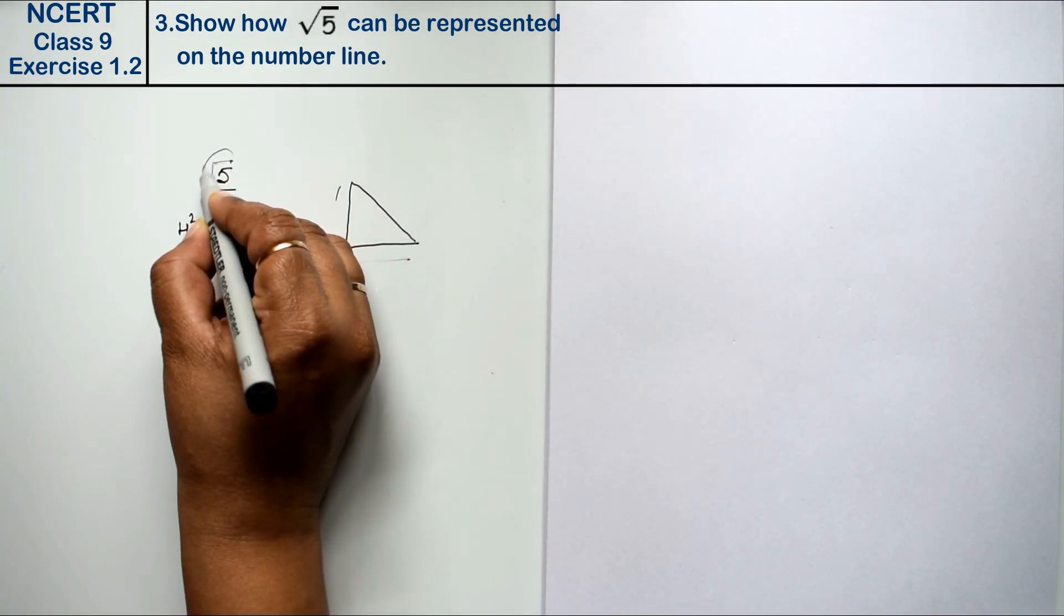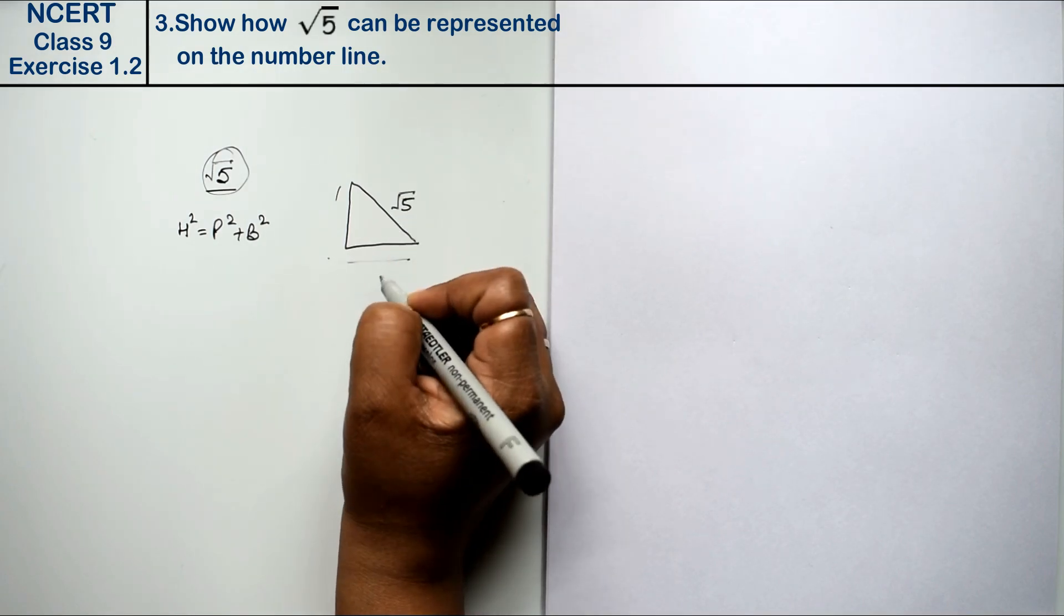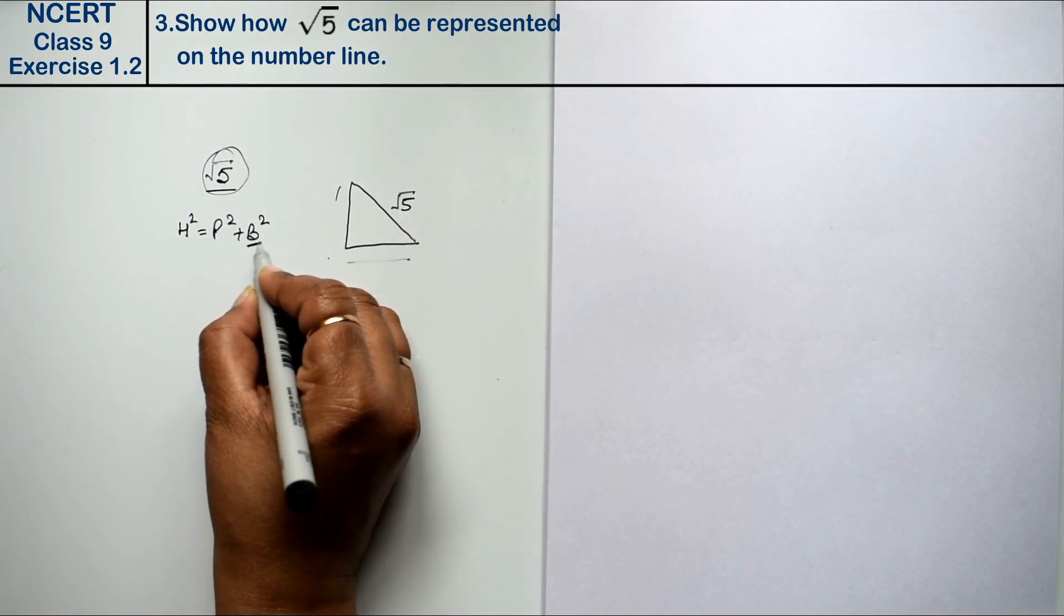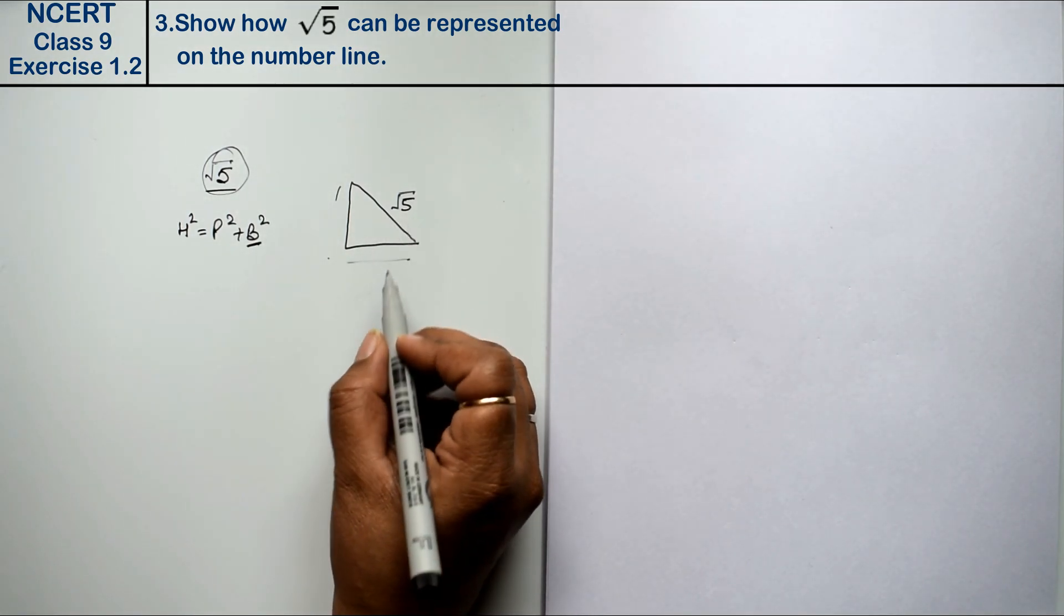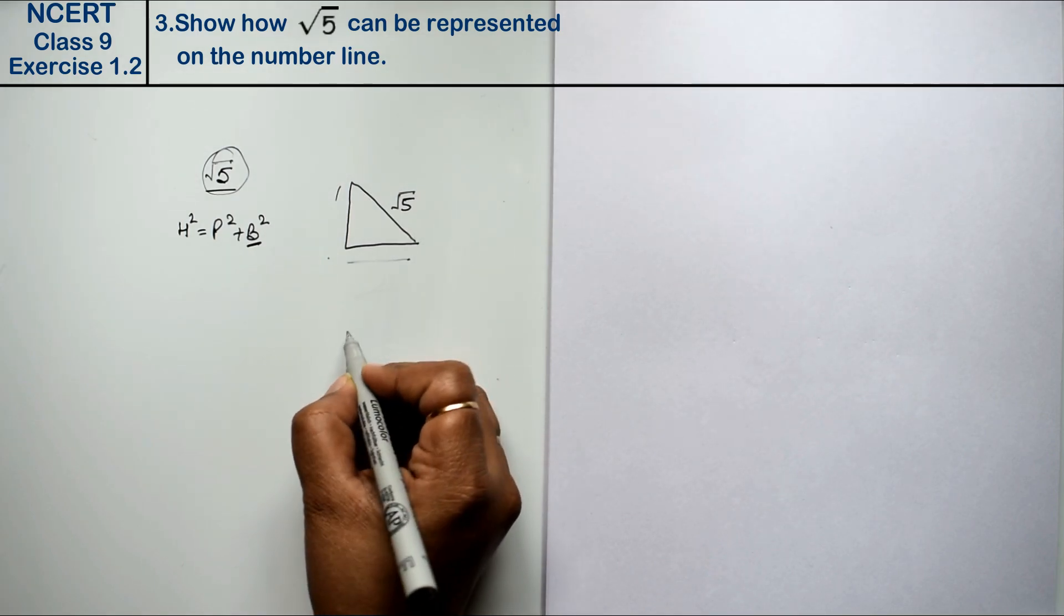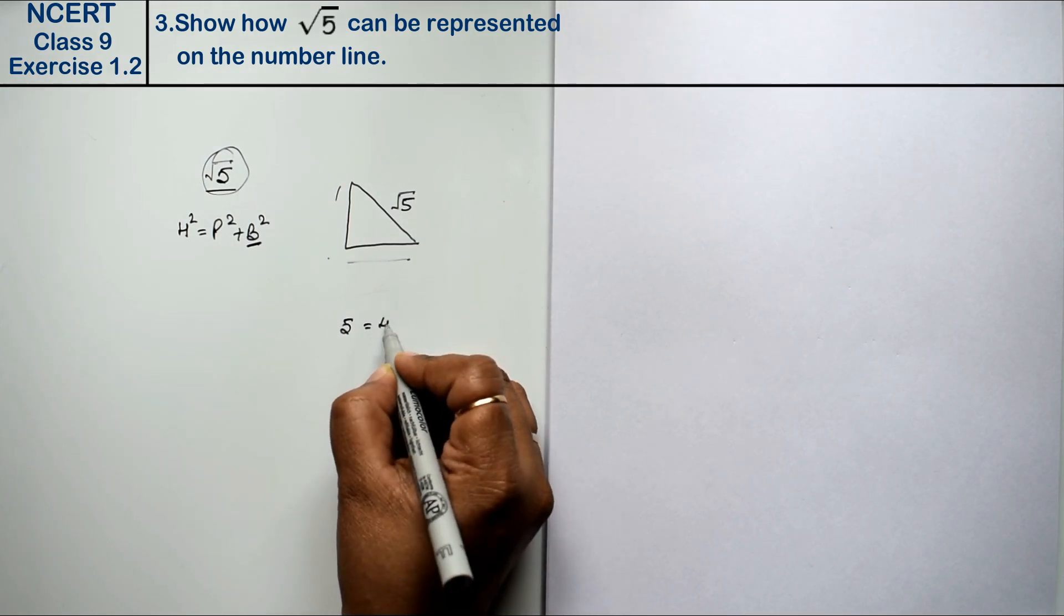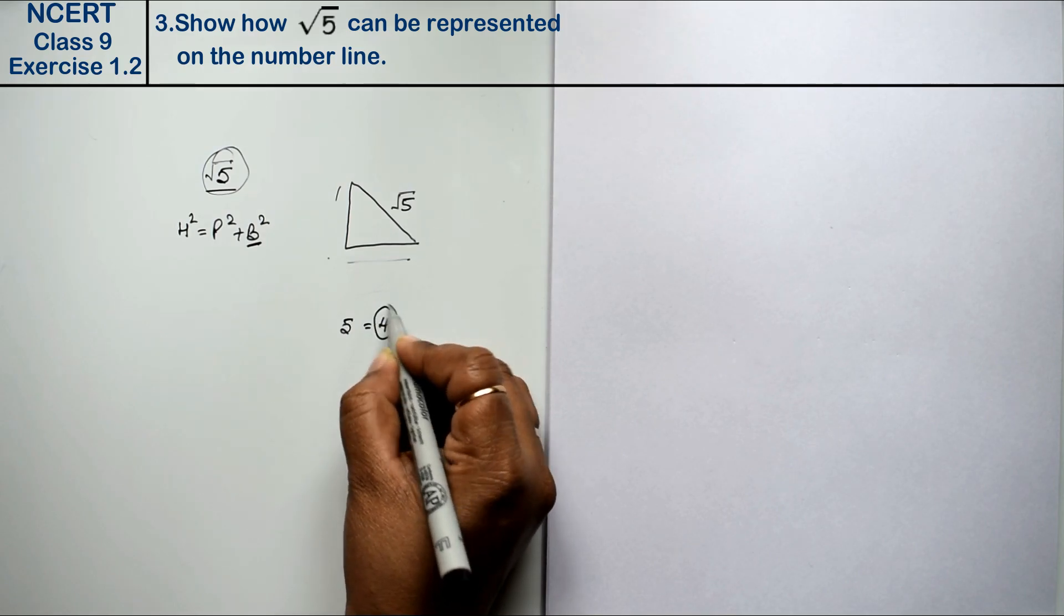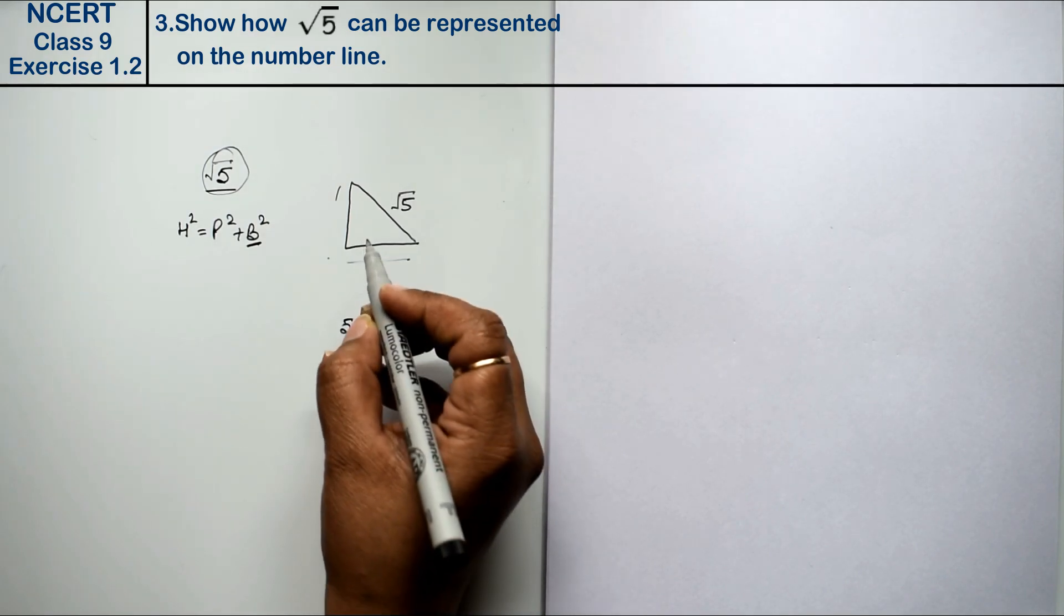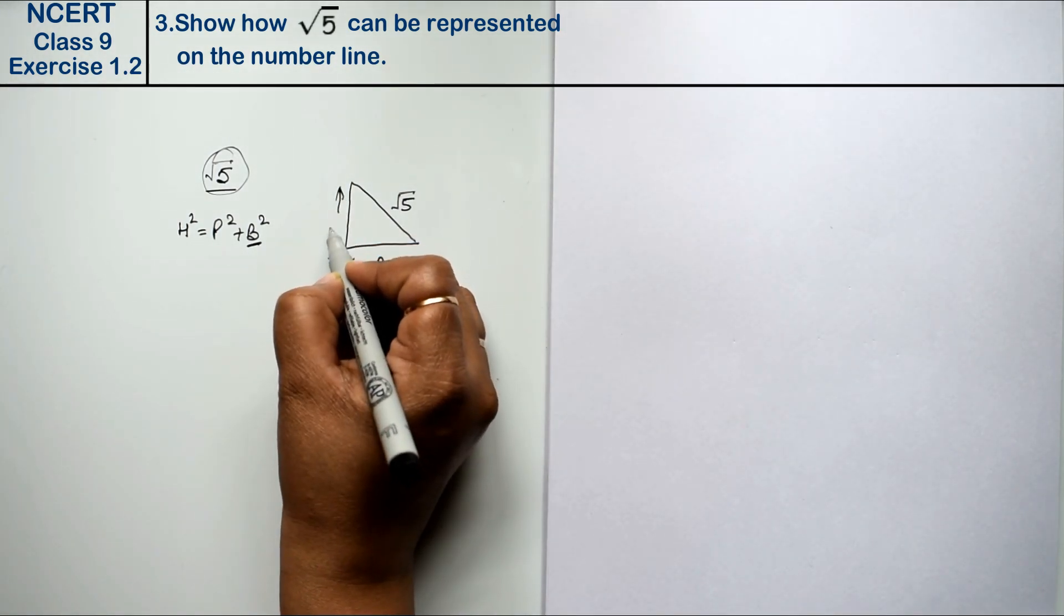Now to represent root 5, we need to represent root 5. First of all, how do we know the base? To calculate base, you can see which value is the nearest to 5, which is the smallest. That is 4. And which square is 4? It is 2. So you can find out that base is our 2.